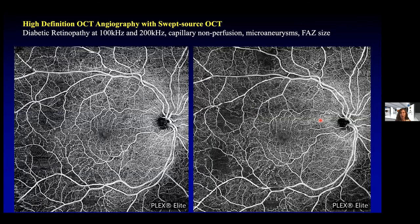Here is an image of high-definition OCT angiography with swept source OCT-A. We can look at images using 100 kilohertz or 200 kilohertz laser source, and we can see on both images that capillary non-perfusion, microaneurysms, and an irregular FAZ size are present. Looking at the image on the right with the 200 kilohertz source, the image is very crisp and clear, and this speed allows very fast imaging.